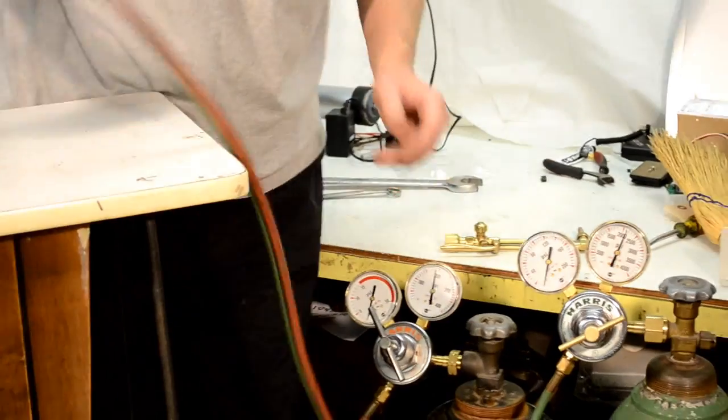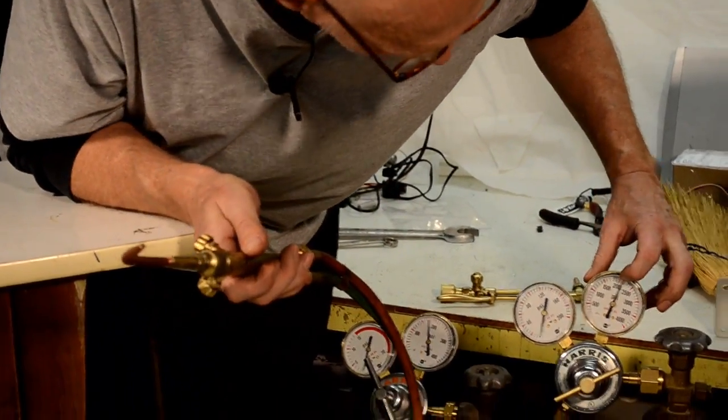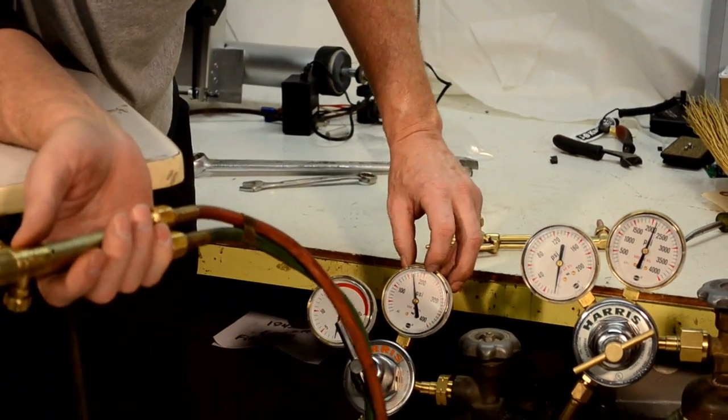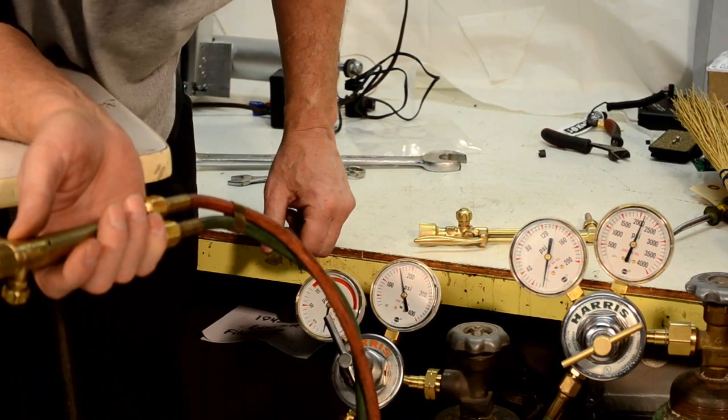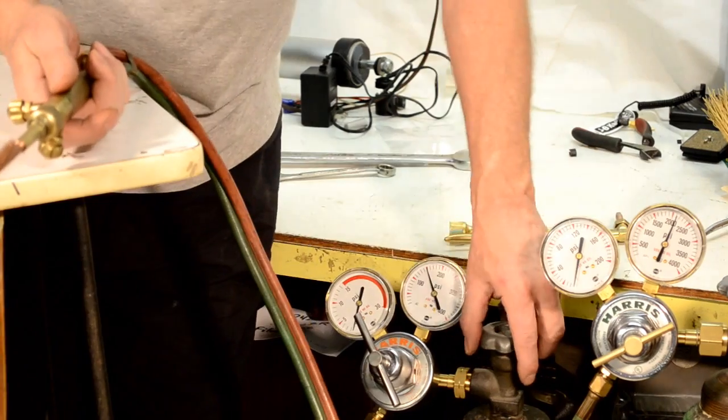Now those are ready. Now go ahead. You can see the gauges. This tank here is up over 2,000. The acetylene tank is up about 160, about 160 or so. It's not quite as full.